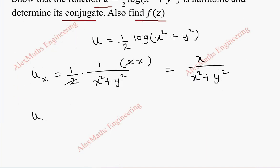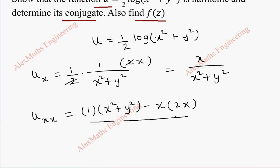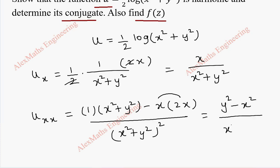Now we have to find uxx. To prove u is harmonic we have to prove it satisfies the Laplace equation. Using the quotient rule: derivative of the numerator is 1, denominator is kept as is, minus the numerator kept as is times the derivative 2x, all divided by x square plus y square whole square. This gives minus 2x square in the numerator, so x square minus 2x square is minus x square, and finally uxx equals y square minus x square over x square plus y square whole square.